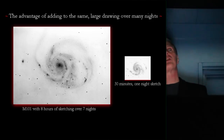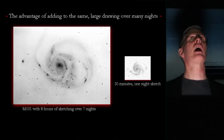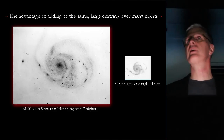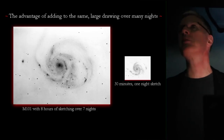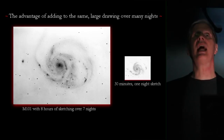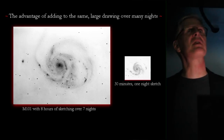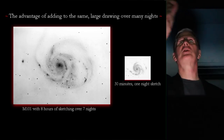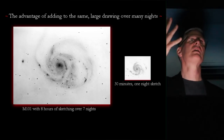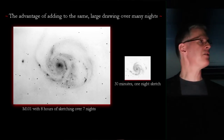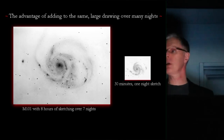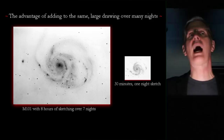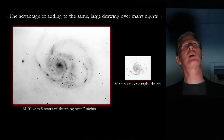This slide shows the advantage of adding details to the same large drawing over many nights. Both sketches are mine at the same relative scale. The one on the right is a sketch made in just one night in about 30 minutes of M101. The larger one on the left represents eight hours of sketching over seven different nights spread out over two years. Both show spiral arms and some of the brighter H2 regions, but the larger drawing shows everything I could see — and to me that makes it priceless.